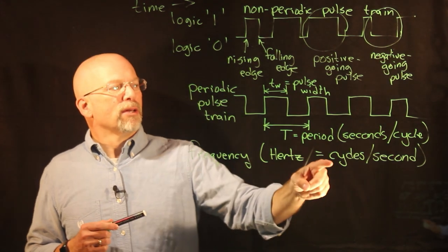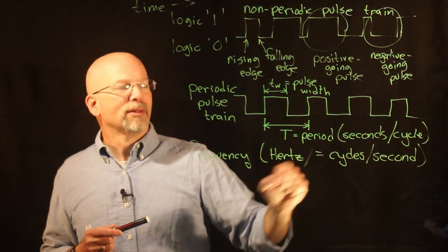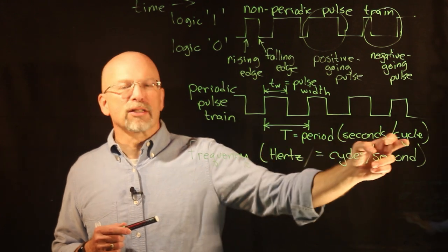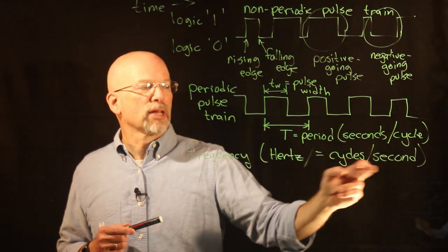Notice a relationship here. I've got period is seconds per cycle, frequency is cycles per second. That seems like there must be some sort of a relationship there.